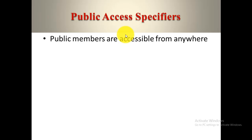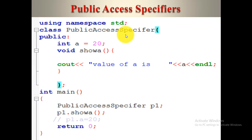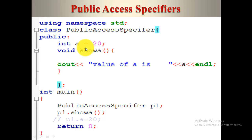Next is the public access specifier. Public members are accessible from anywhere in the program — either inside the class, outside the class, or in derived classes. There is no issue accessing them inside the class, outside the class, in the main function, or in derived classes.